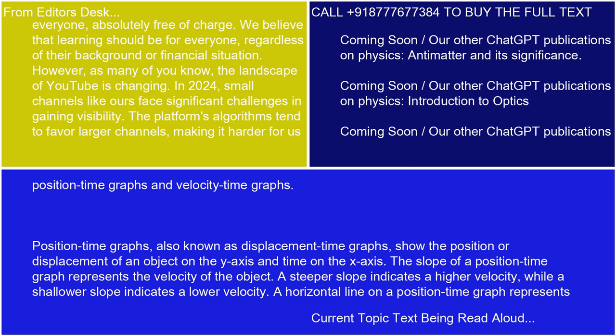Position Time Graphs, also known as Displacement Time Graphs, show the position or displacement of an object on the y-axis and time on the x-axis. The slope of a position-time graph represents the velocity of the object. A steeper slope indicates a higher velocity, while a shallower slope indicates a lower velocity.